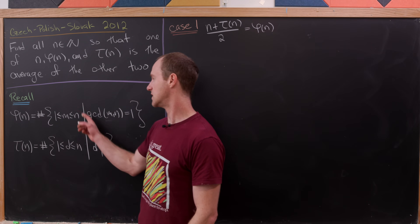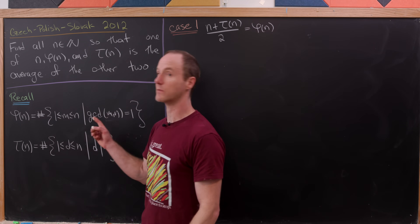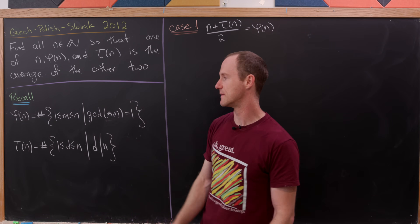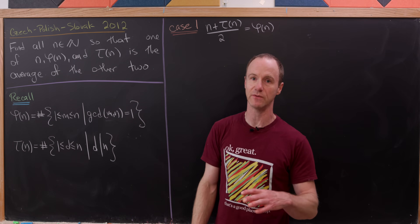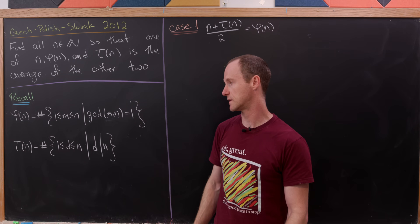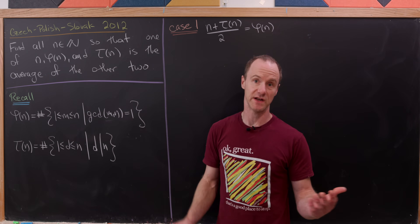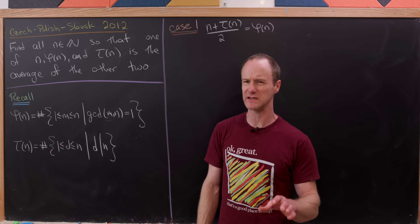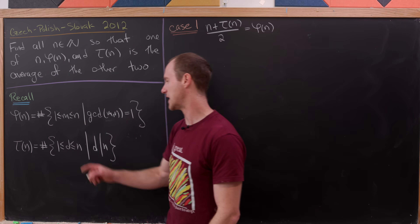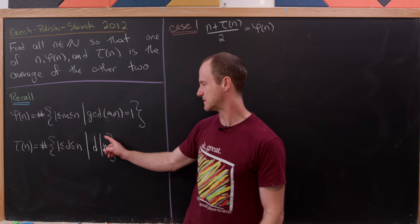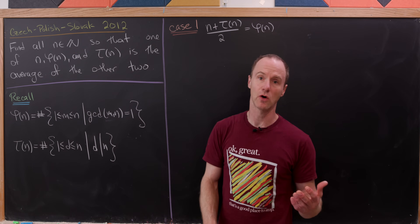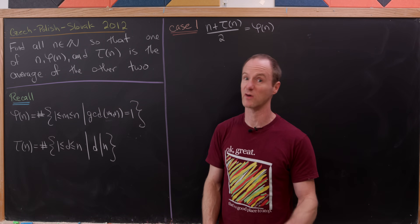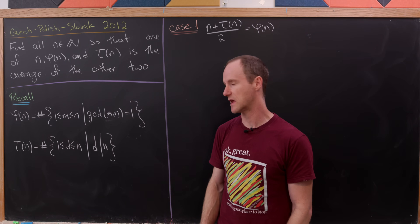φ(n) is the number of numbers between 1 and n that are relatively prime to n — in other words, their GCD with n is 1. Then τ(n) is the number of positive divisors of n. We specify positive divisors because divisibility could hold for negative numbers as well, so we don't want to consider those.